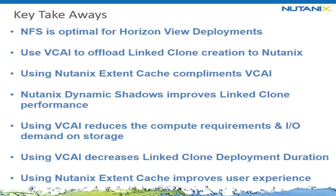The key takeaways from today's tech talk: NFS is optimal for Horizon View deployments regardless of platform. It enables the use of VCAI, which can be offloaded to your array — in this case Nutanix. Using Nutanix extent cache is complementary to VCAI and recommended, as is using dynamic shadows to improve performance for linked clones. VCAI reduces compute and IO requirements in your cluster, freeing up array IO for linked clone performance rather than creation overhead. VCAI also decreases maintenance windows because linked clones can be deployed and refreshed much faster, and Nutanix extent cache improves user experience by reducing latency.